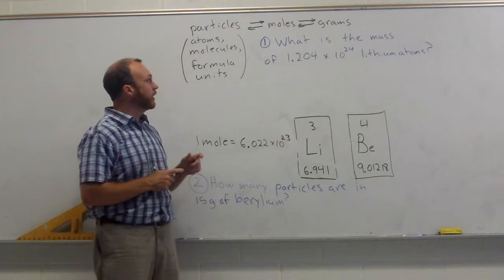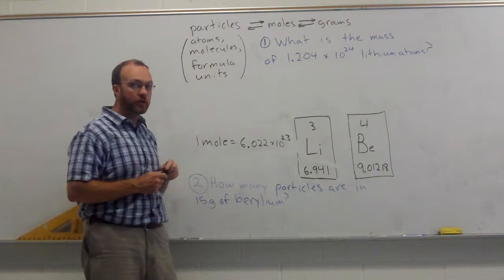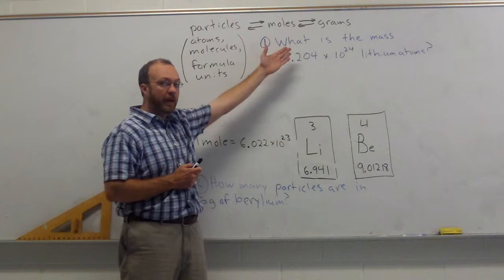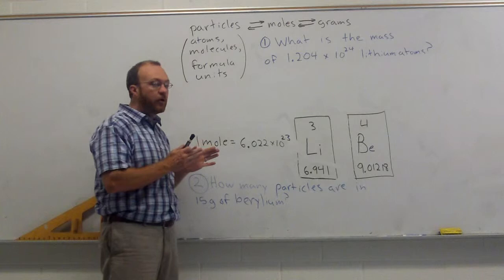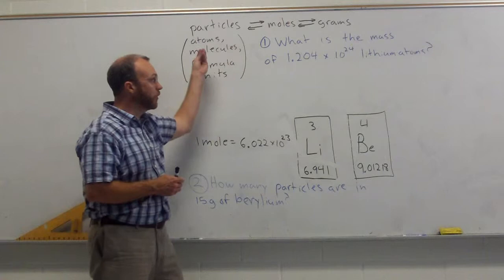That allowed us to change from moles to particles. So we can change from moles to atoms if it was a single element, or moles to molecules if it were a covalent compound, or moles to formula units if it were an ionic compound. We can also change from particles back into moles. What I want you to see now is that this idea of a mole allows us to switch from grams, something that we can measure, into the actual number of particles, something that we would like to be able to count, or vice versa, from particles back into grams.